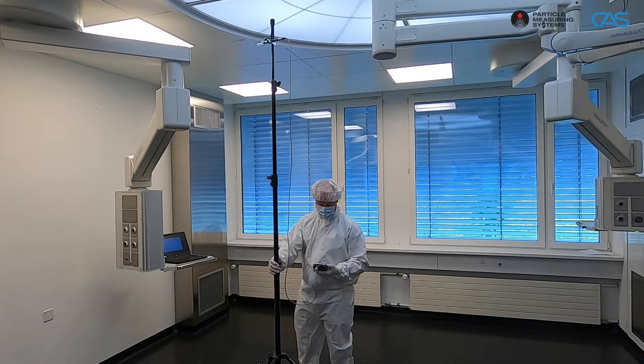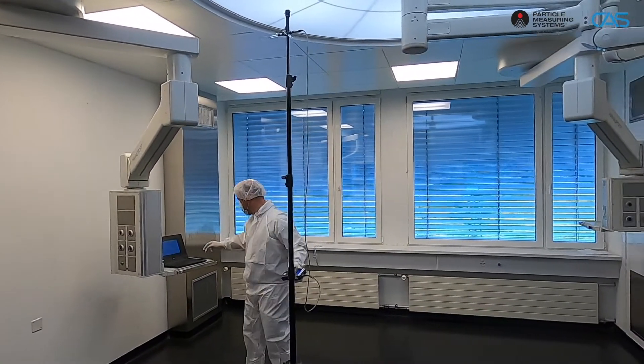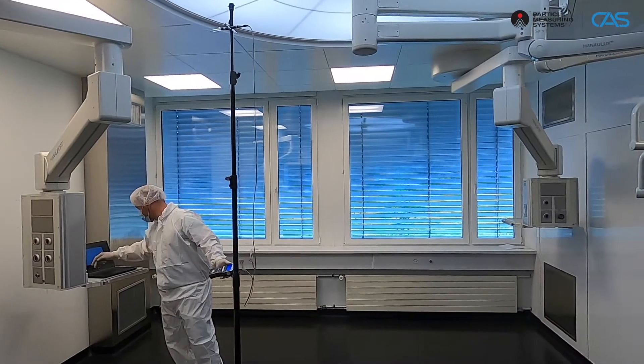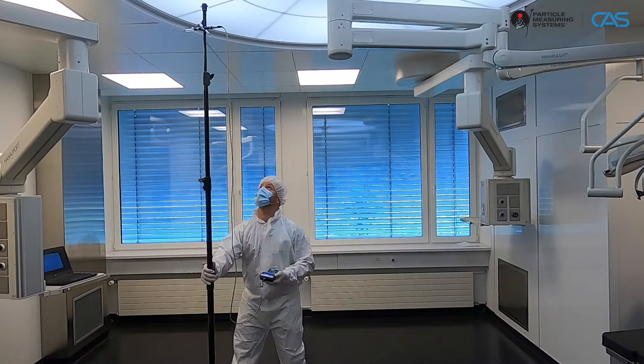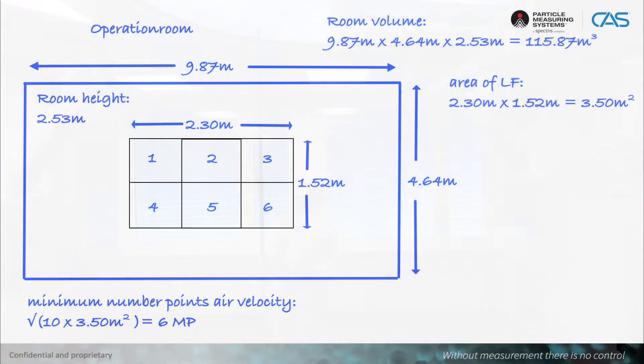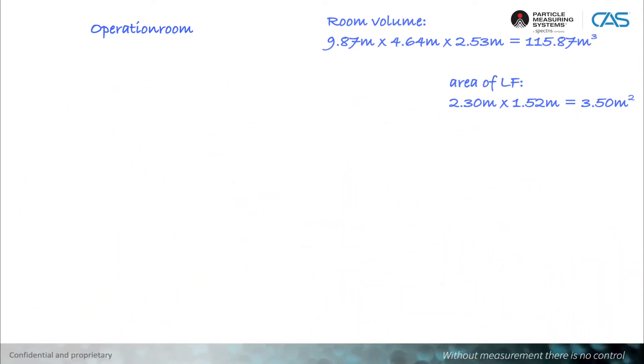Usually, the air velocities to be measured are in a range of 0.20 m/s and 0.50 m/s. Therefore, the measurement is usually carried out with a hot wire anemometer. The measured values are documented according to the positions.